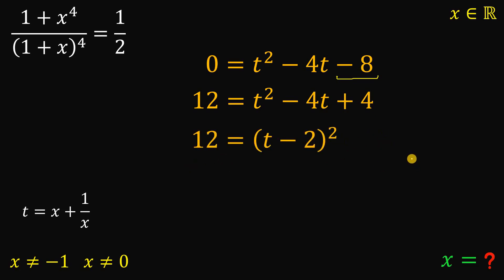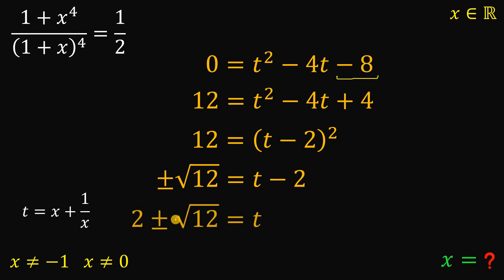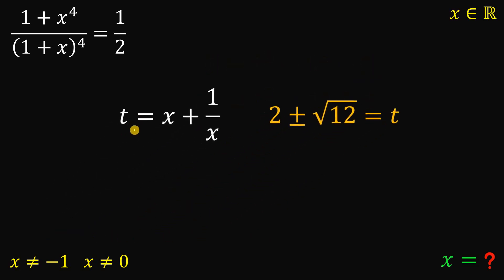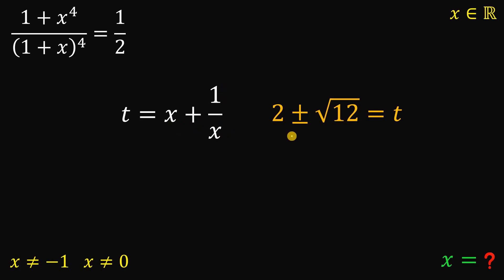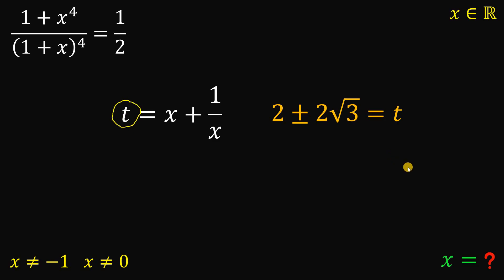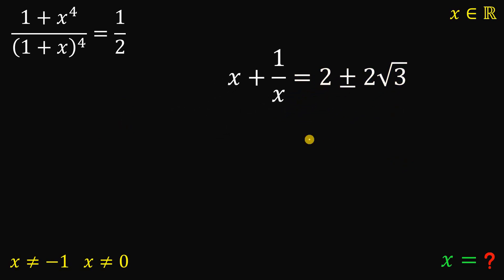Now we can solve for t. Taking the square root of both sides, we have positive or negative square root of 12 equals t minus 2. Thus, t equals 2 plus or minus square root of 12. But we actually care about the value of x, not t. Since 12 equals 4 times 3, we can simplify the square root of 12 as 2 times square root of 3. Now replacing t with x plus 1 over x, and substituting t equals 2 plus or minus 2 times square root of 3, let's solve for x.